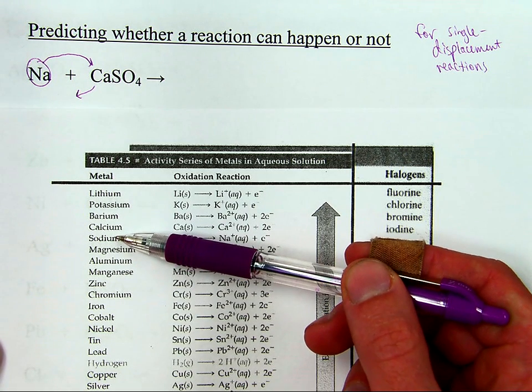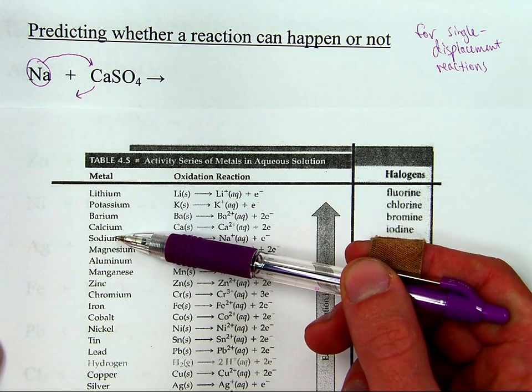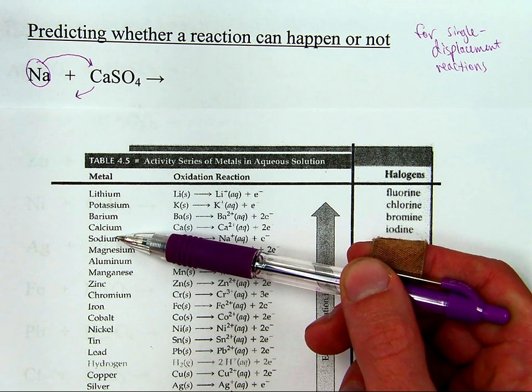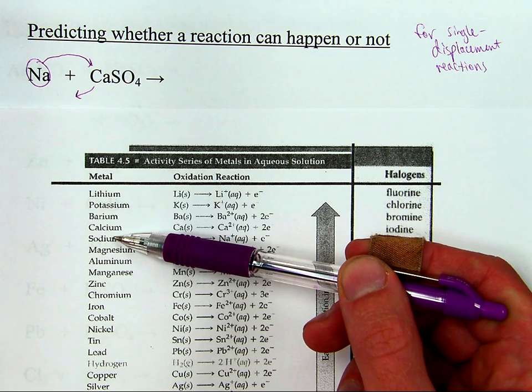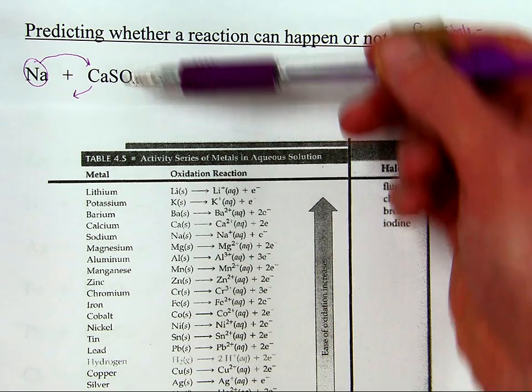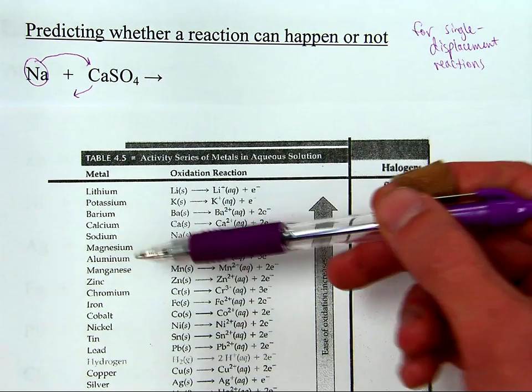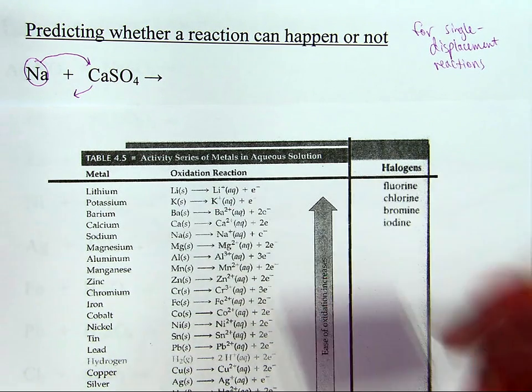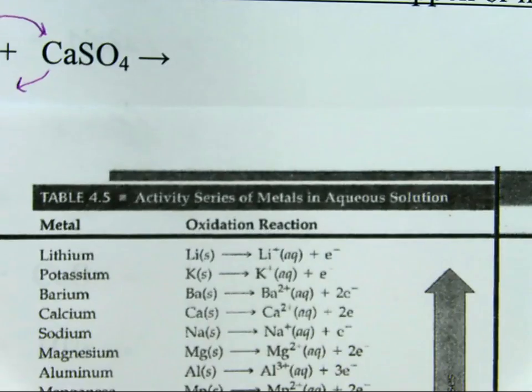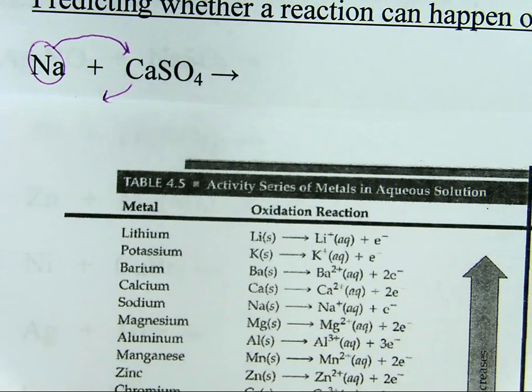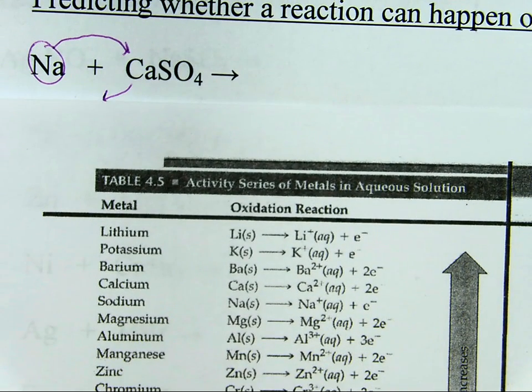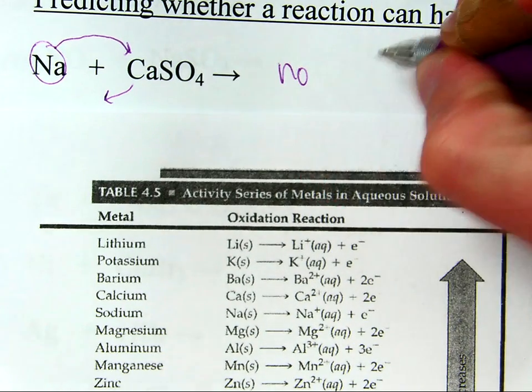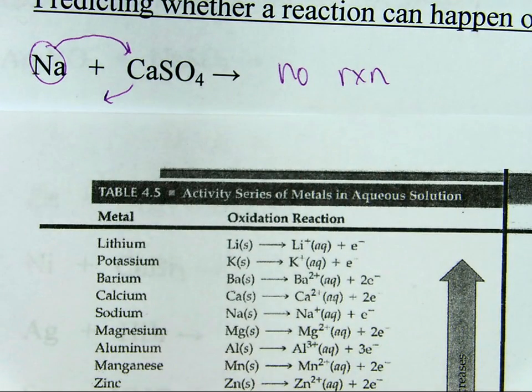So if sodium is higher on the list than calcium, then the answer is yes, sodium can replace it and cause it to happen. If on the other hand, sodium is not above calcium on the list, this reaction cannot happen. So looking at the list, I can say right now, and I'll zoom this in a bit so that it's easier for you the viewer to see. I can say right now, sodium is not above calcium on the list. Therefore, no reaction. Or I can even just say no, it won't happen.